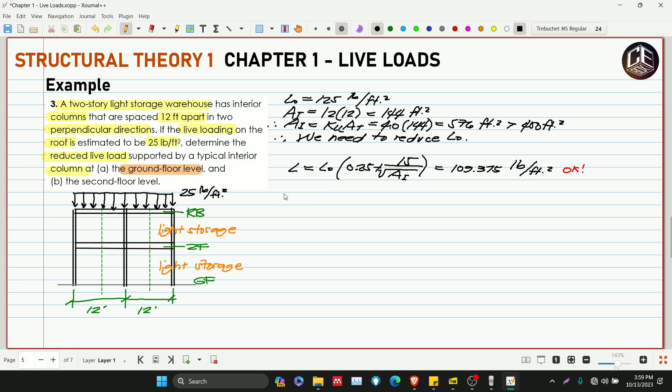So letter A para sa ground floor level. So para sa ground floor ito, yan interior column at GF. Tapos ito naman interior column at second floor level.